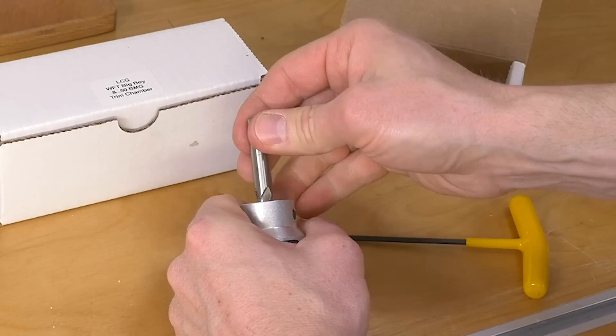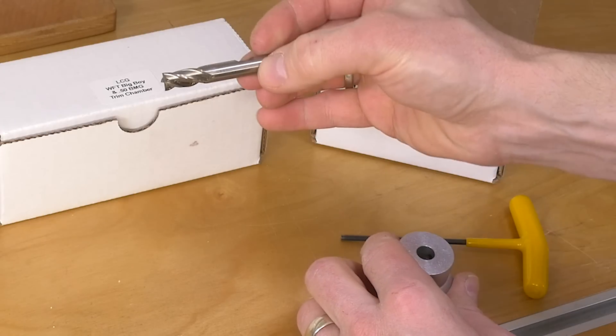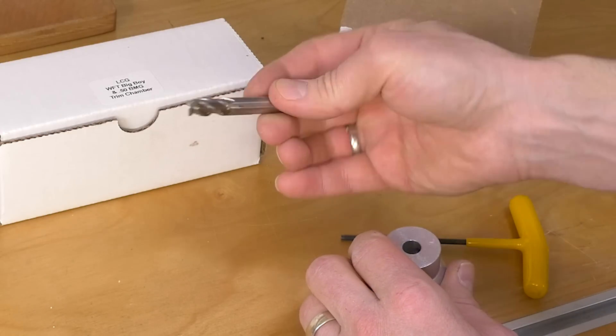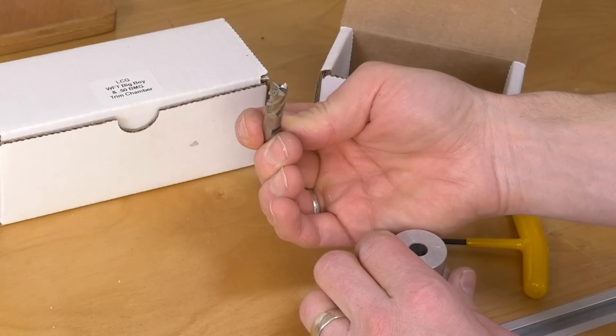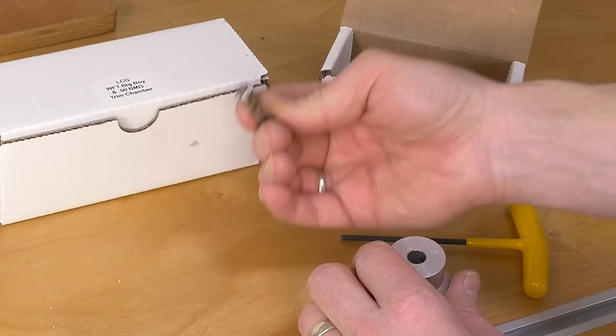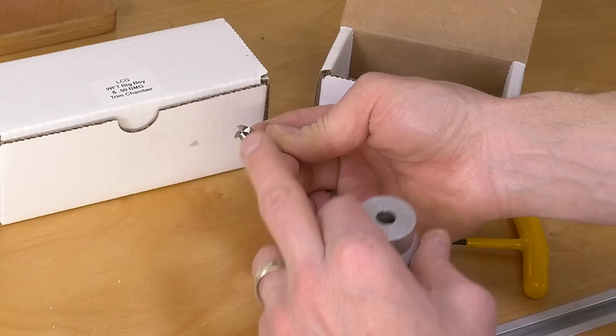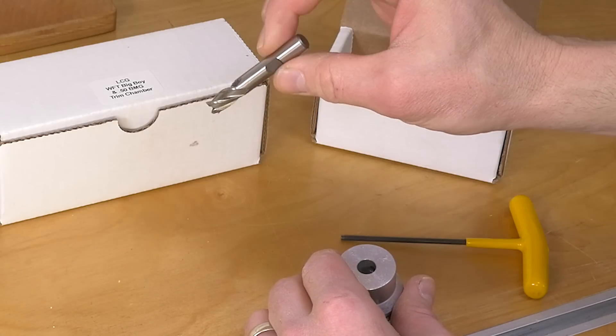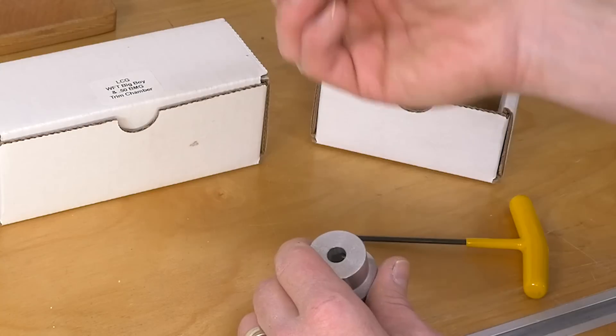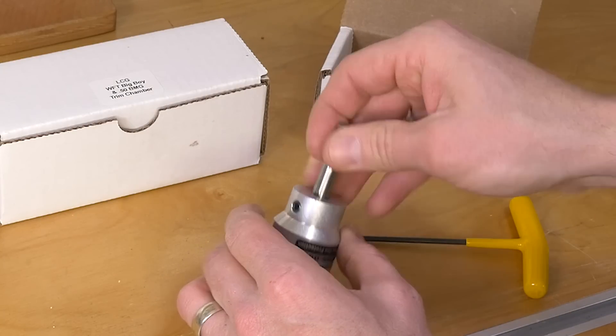And if we loosen those we reveal the guts which is an end mill. Now I'm familiar with end mills because I have a milling machine and I use them all the time. This is a great way to trim brass because it's got four cutting heads. You could replace this with a different end mill. You could upgrade it to carbide. There's all sorts of great options.